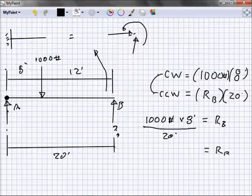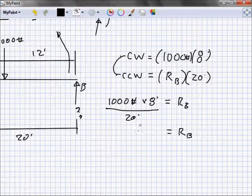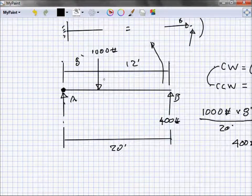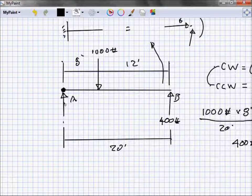So what's B equal to? 400 pounds. Good, we got 400 pounds, now it gets easy. I've got 1,000 pounds going down, 400 coming up, what's this got to be? 600.